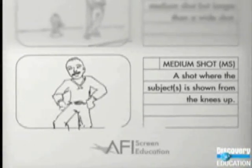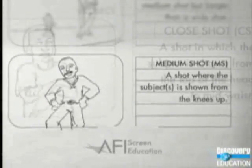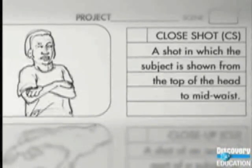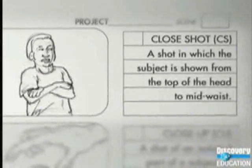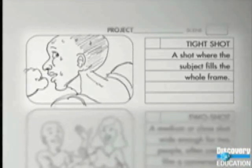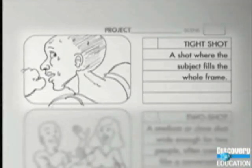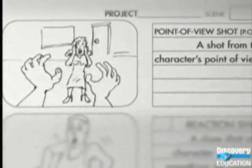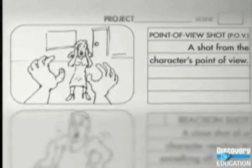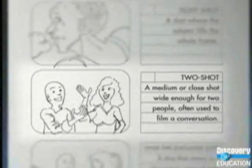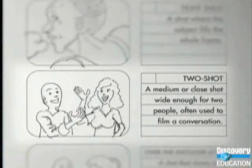A medium shot is one where you show the character from the knees up, while a close shot is from the top of the head to about mid-waist. A tight shot is where a character fills nearly the entire frame. One shot students use a lot is the point of view shot, or POV — that's a shot from the character's perspective or point of view.